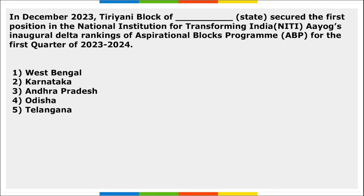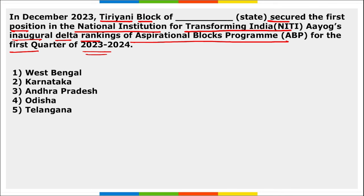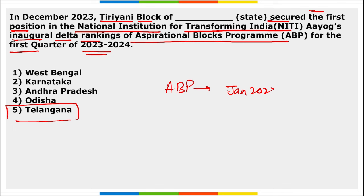Tiryani block of Telangana state secured the first position in NITI Aayog's inaugural Delta Ranking of Aspirational Blocks Program for the first quarter of 2023-24. Remember: this Aspirational Blocks Program was launched by NITI Aayog in January 2023. The main focus is on improving governance to enhance citizens' quality of life, especially in the underdeveloped blocks of India.